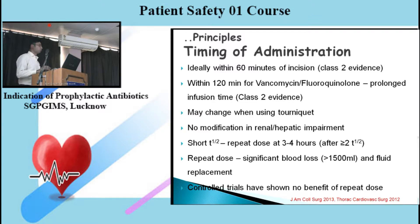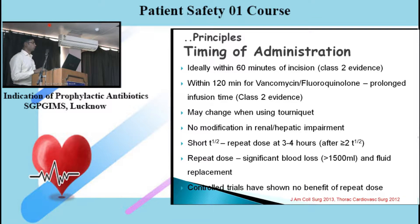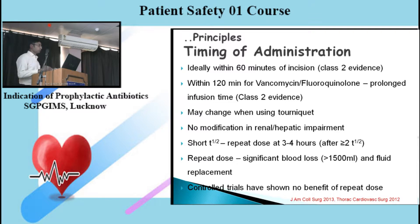The recommendation stands that antibiotic should be given within 60 minutes, though data does not hold very true in all cases. For vancomycin and fluoroquinolones, the time frame has been extended to within 120 minutes because these antibiotics are given by infusion and take time to reach adequate tissue levels. These guidelines may change when a tourniquet is used — as in orthopedic surgeries to decrease blood loss — in which case the antibiotic should be given before the tourniquet is applied.